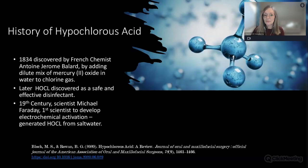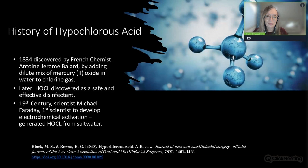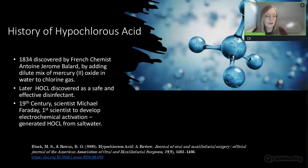Let's talk first about the history of hypochlorous acid. In 1834, it was discovered by French chemist Antoine-Jérôme Ballard, who made it by adding a dilute mix of mercury oxide in water and chlorine gas. Later it was recognized as a safe and effective disinfectant. In the 19th century, scientist Michael Faraday was the first to develop electrochemical activation—generating hypochlorous acid from salt water.